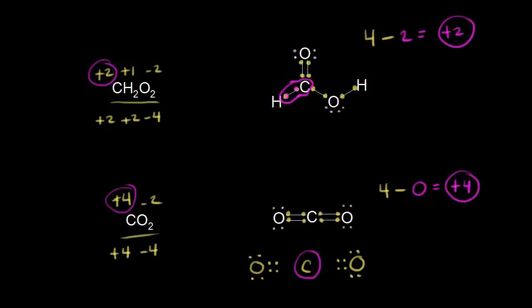For each oxygen in CO₂: oxygen should have six valence electrons, and after accounting for electronegativity, each oxygen is surrounded by eight electrons. So six minus eight gives minus two for the oxidation state of oxygen.